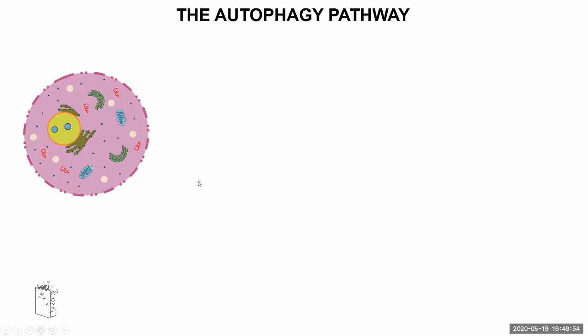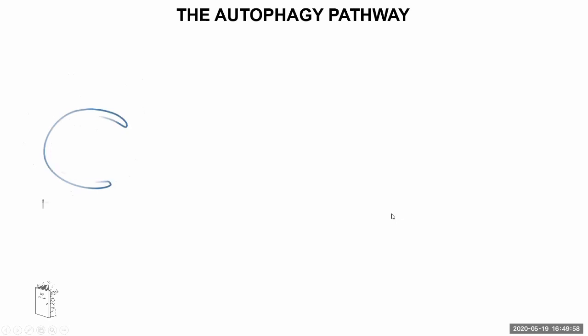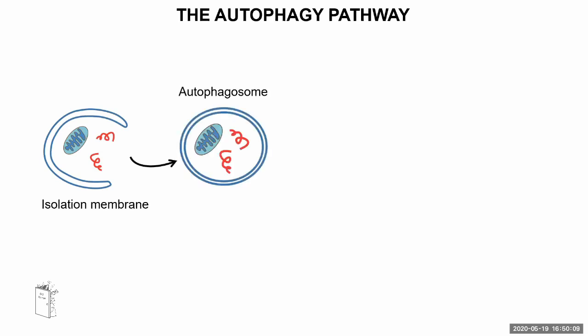This is our cell upon induction. The first structure that is formed around the cargo is called the isolation membrane or phagophore. The isolation membrane will continue to grow and expand until it forms a closed structure called the autophagosome. Importantly, the autophagosome is a double bilayer membrane vesicle and it has no degradative capacity — it's kind of our shopping bag with the stuff that the cell wants to get rid of.